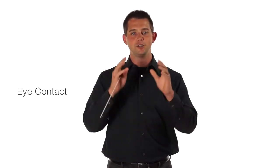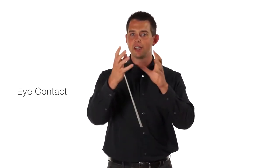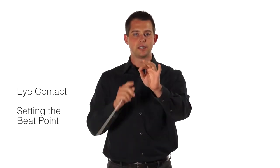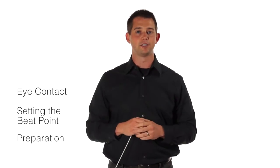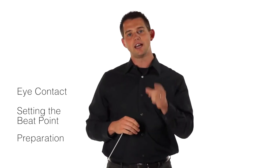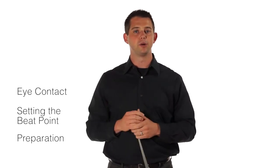The first one is eye contact. Direct eye contact as if you're having a conversation with the person that you're about to cue. The second thing is setting the beat point. Setting the beat point, setting the plane on a level that's clearly visible to the player and then preparing that sound is the third key. So eye contact, setting the beat point and preparation and the breath are the three important parts of cues.